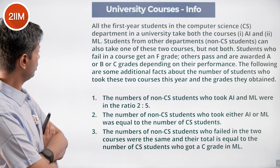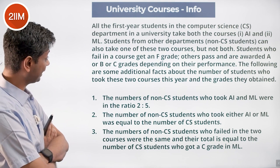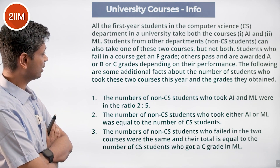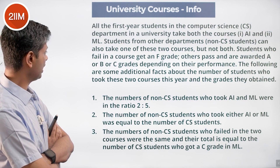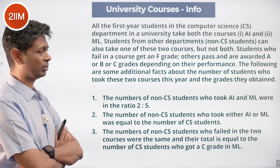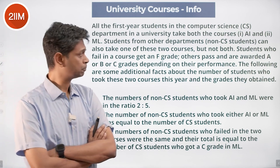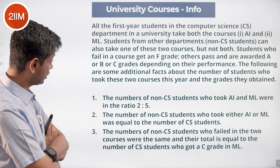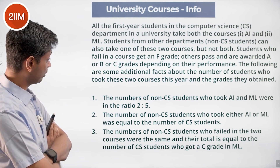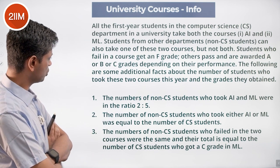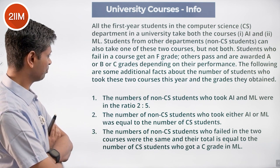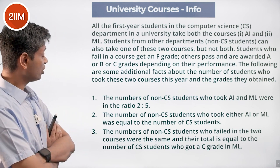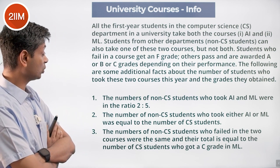Students who fail in a course get an F grade; others pass and are awarded a B or C grade depending on their performance. The following are some additional facts about the number of students who took these two courses this year and the grades they obtained.